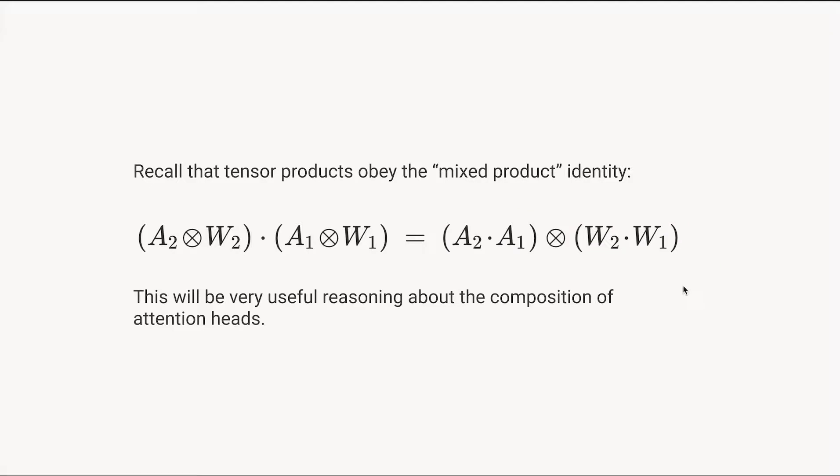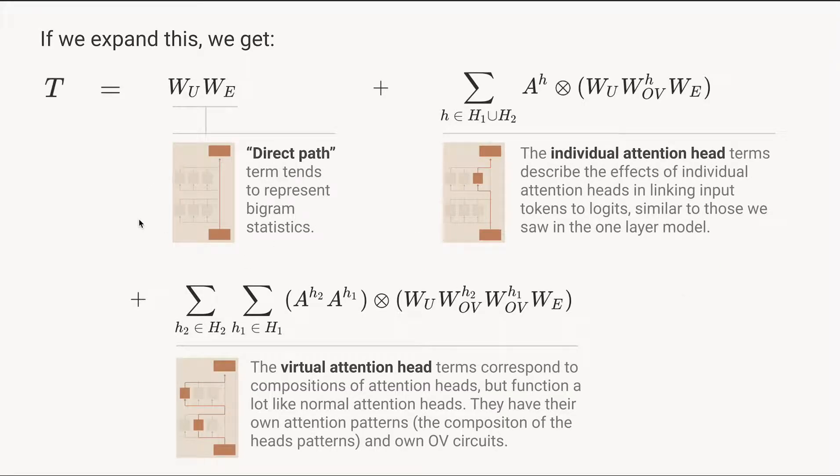So now we can write the expanded form of that equation. We're going to have sort of three types of terms. We have the direct path term. We've seen this term all the way back to our zero layer transformer. It just corresponds to this direct path down the transformer. And it tends to represent bigram-ish statistics.